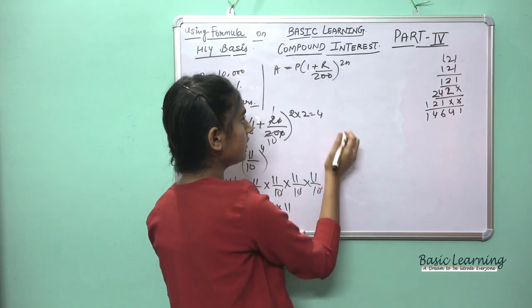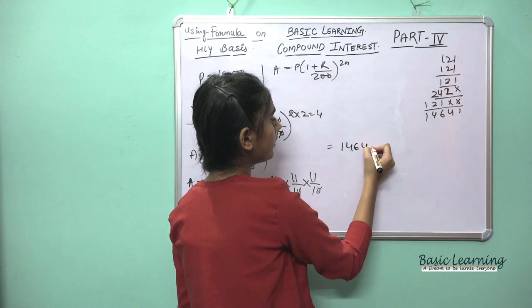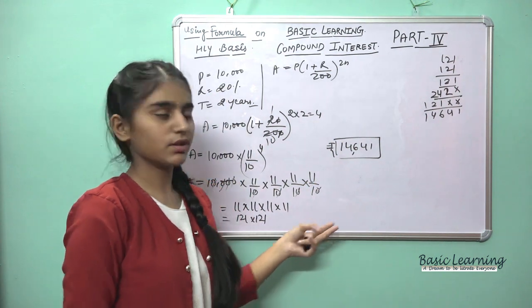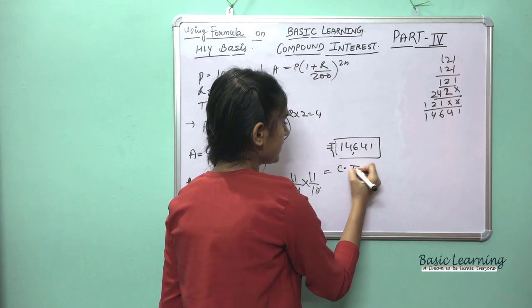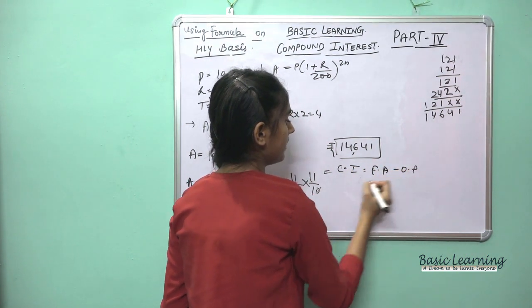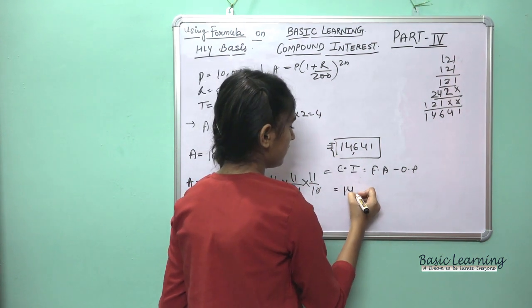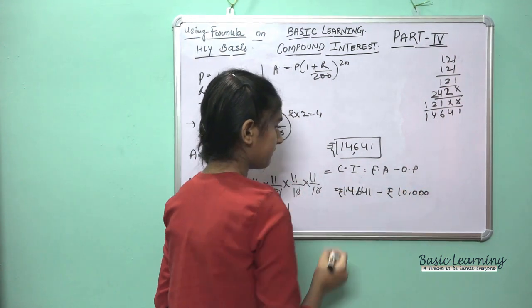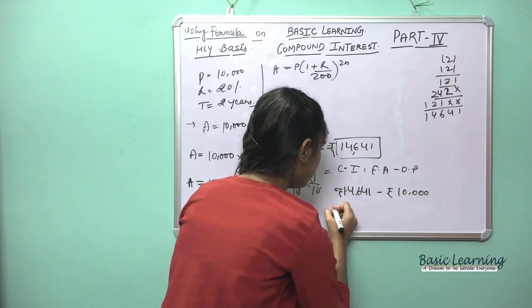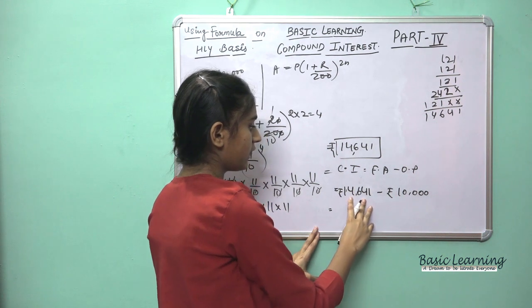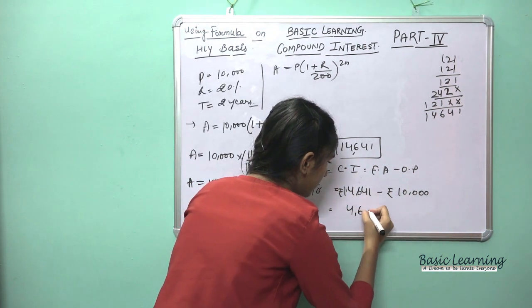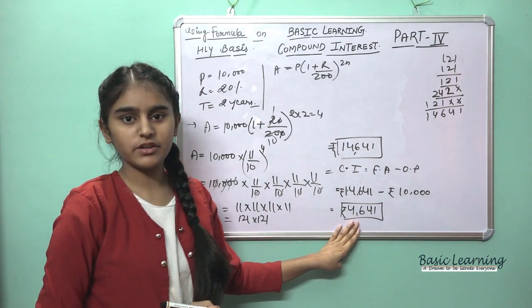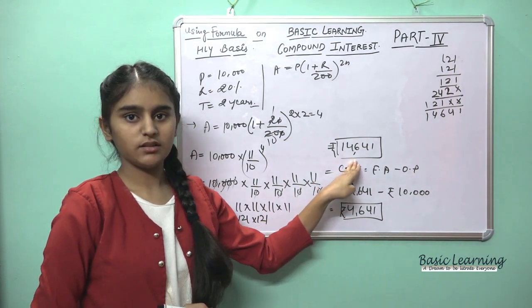We get the amount = Rs. 14,641. For compound interest: CI = Final Amount − Original Principal = Rs. 14,641 − Rs. 10,000 = Rs. 4,641. So the compound interest is Rs. 4,641 and the total amount is Rs. 14,641.